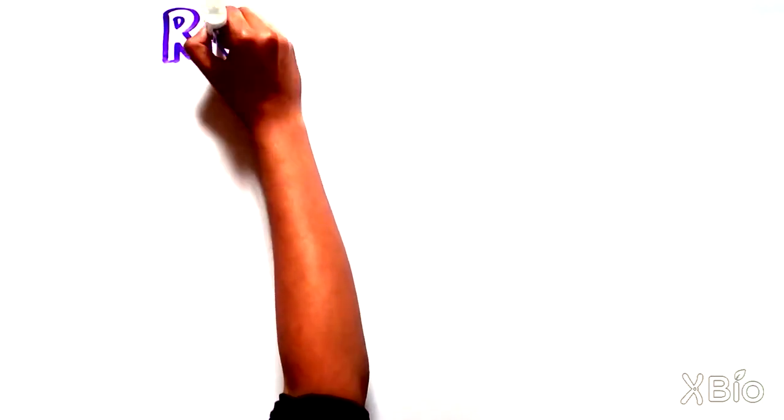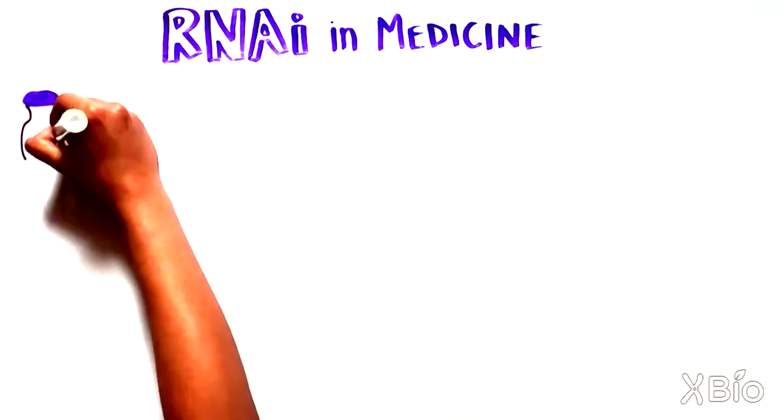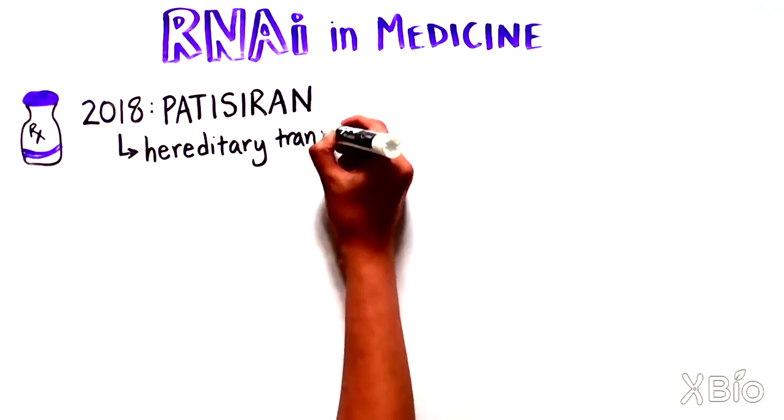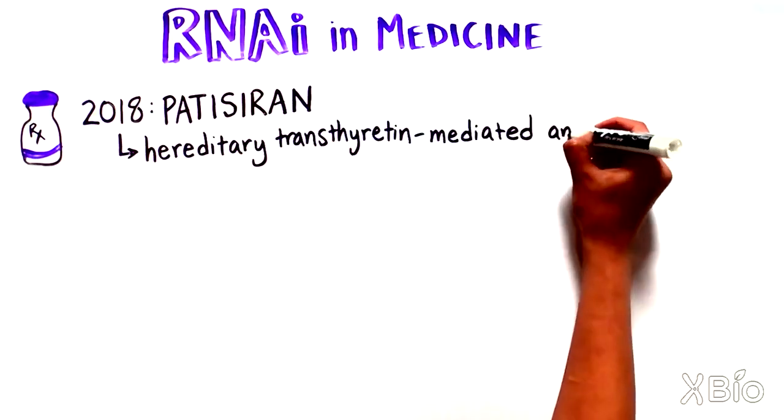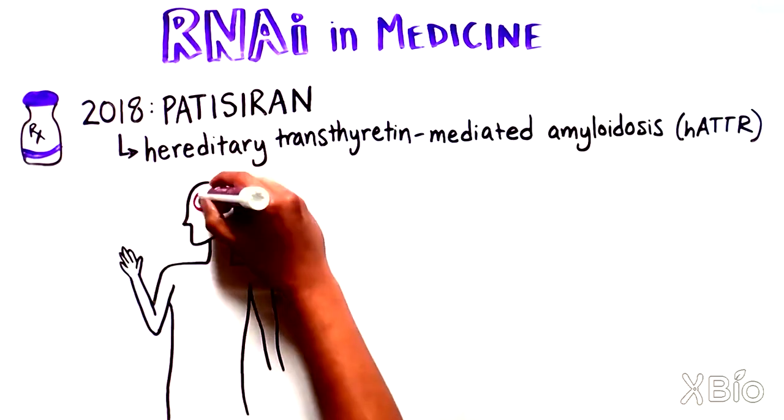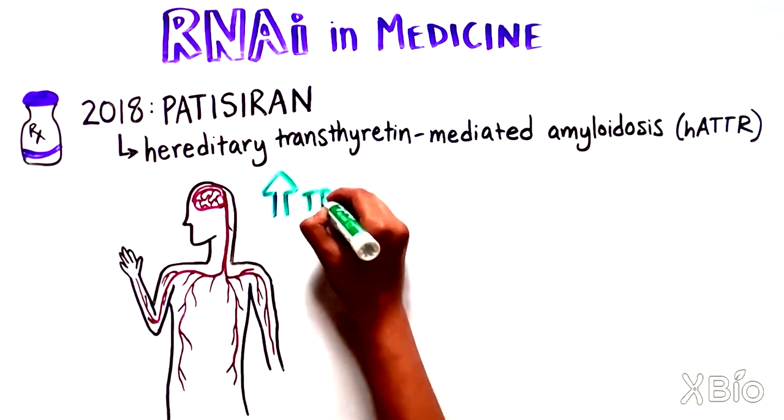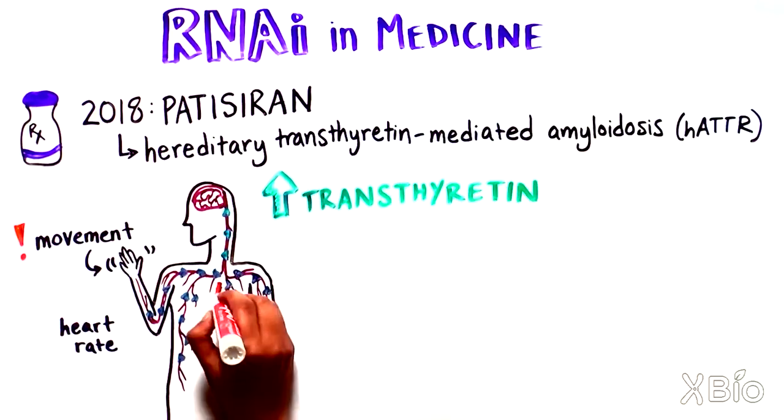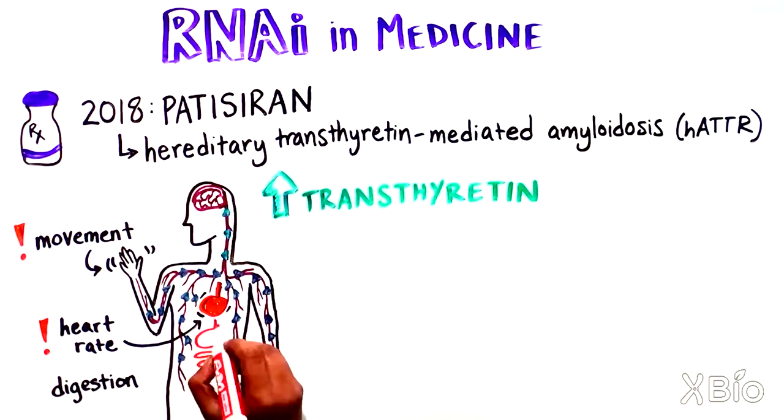RNAi also has found its way into medicine. In 2018, patissiran, an siRNA molecule, was approved for a disease of the nervous system caused by hereditary transthyretin-mediated amyloidosis. This disease is characterized by the abnormal buildup of a protein called transthyretin in the nervous system, which can impact movement, heart rate, and digestion.